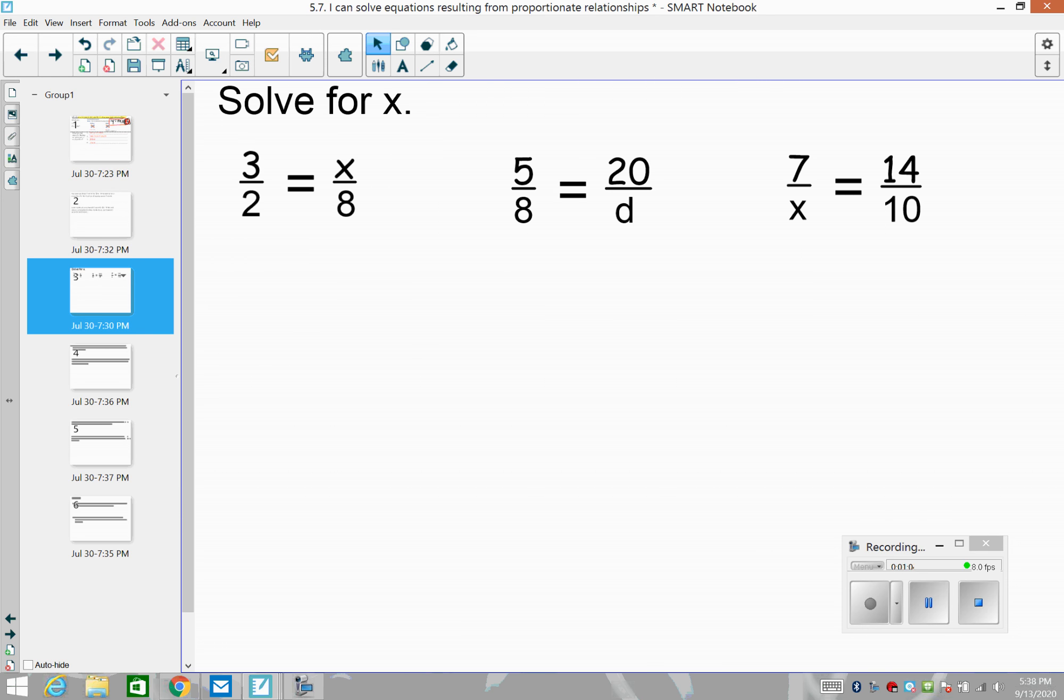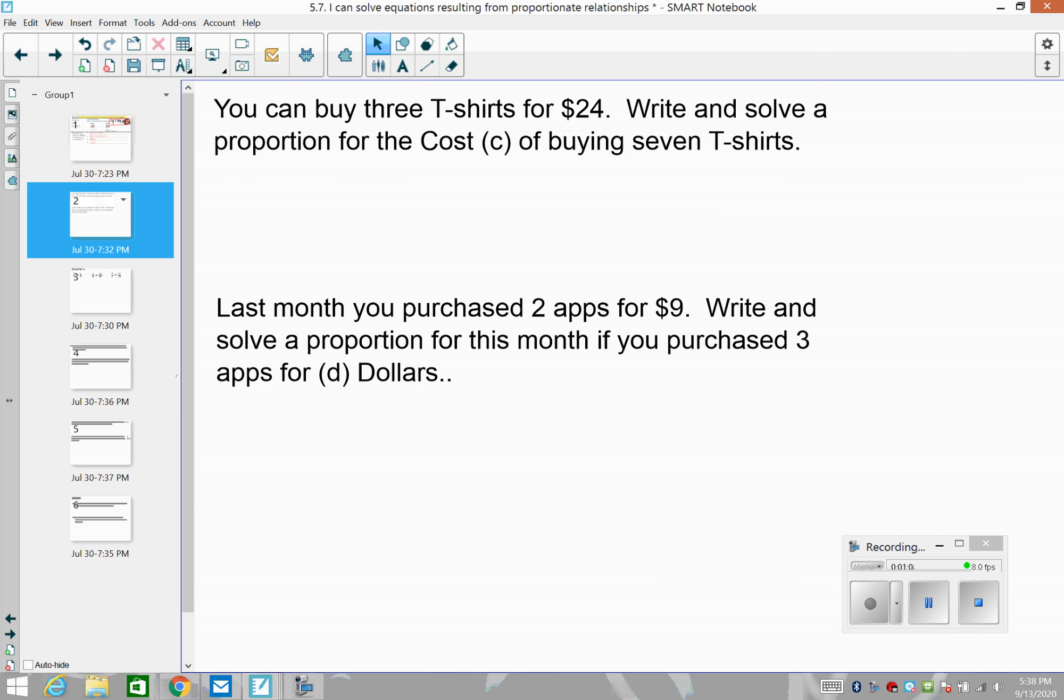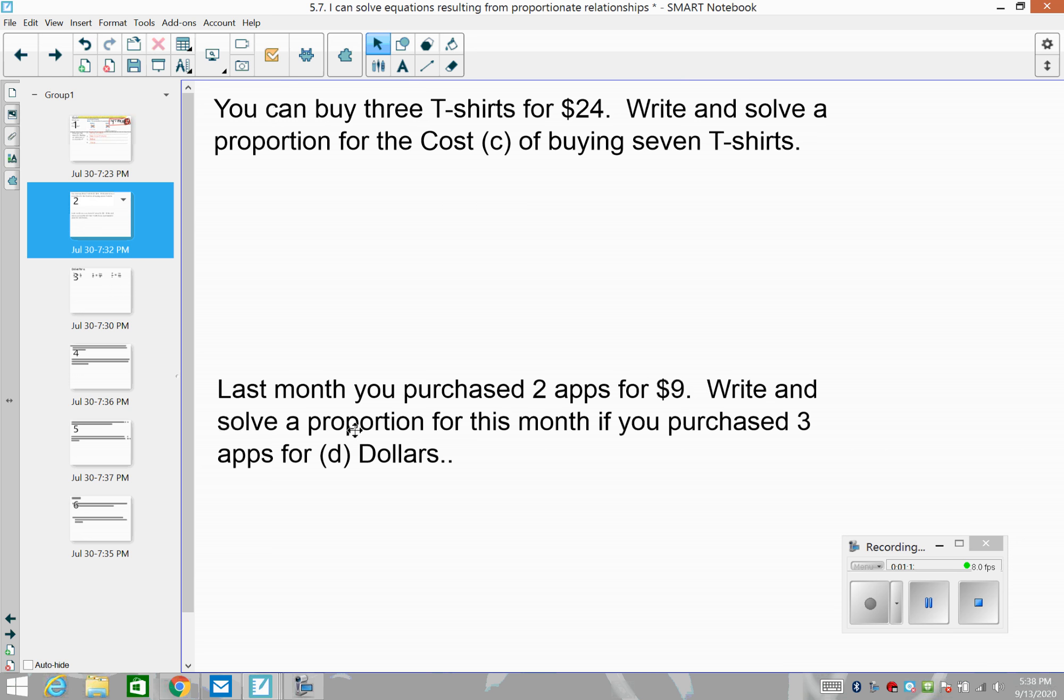So let's start by setting up the T table. You can buy three t-shirts for $24. So the two things that I'm hearing are t-shirts and dollars. Now it doesn't matter which side you put which thing, just get the two variables in the table in any order. So we have three t-shirts for $24. That's a data point. Write and solve a proportion for the cost of buying seven t-shirts. So we know that we have seven t-shirts. So we are going to put the seven in the t-shirt column. So what we want to know is what does it cost for seven t-shirts? So our variable then would go for cost.